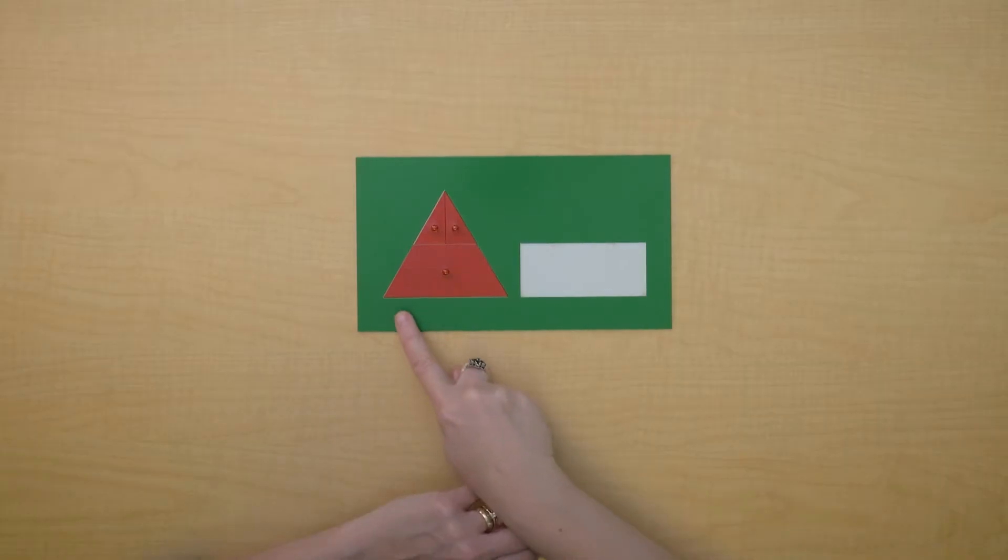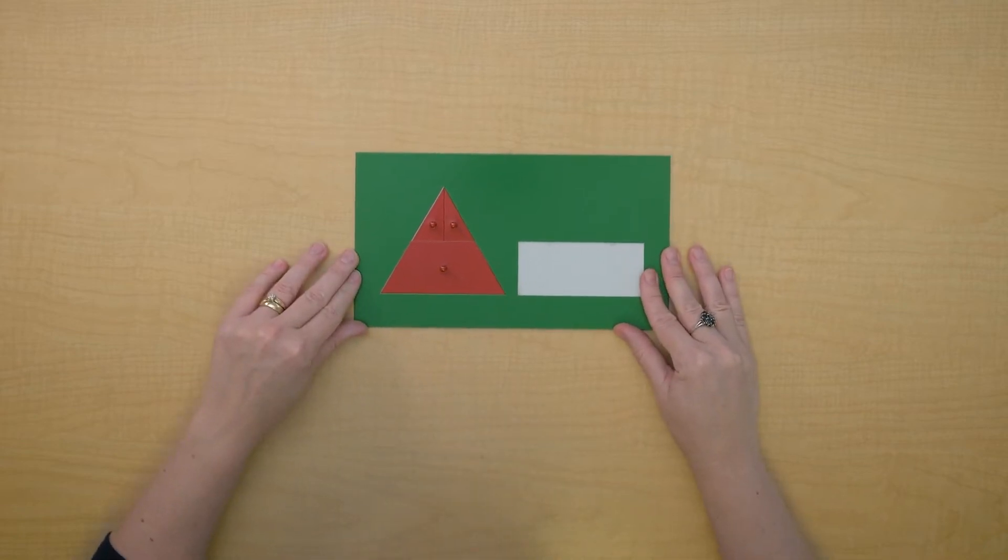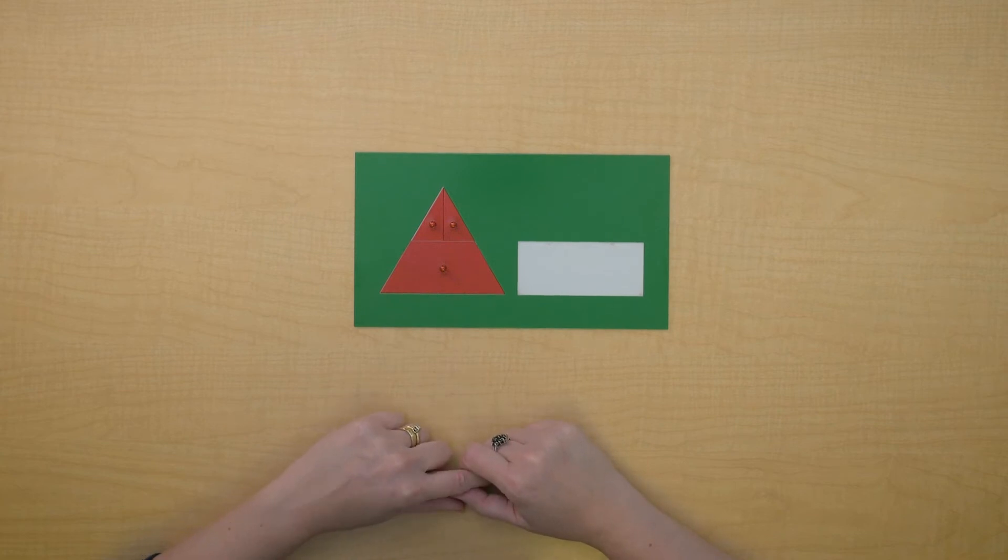So we're going to start here with this triangle plate and just see how it works with the formula. So we have a triangle and we have a rectangle and we want to find the formula for the area of a triangle.